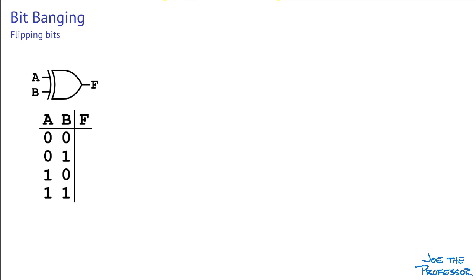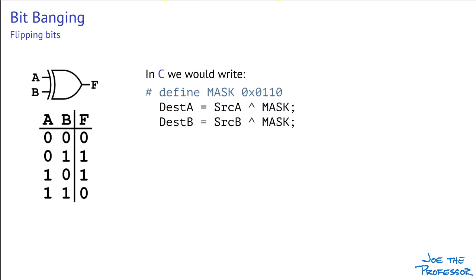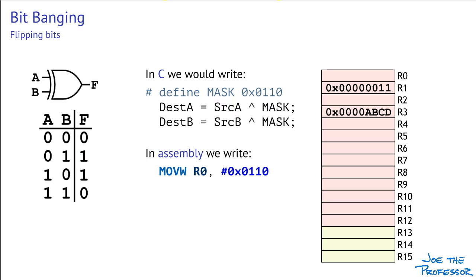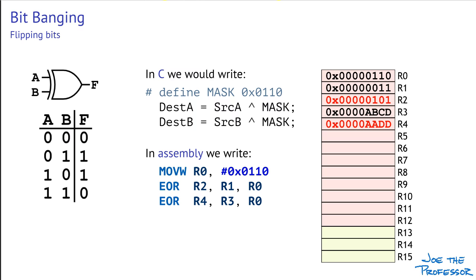The exclusive OR operation is used to toggle or flip a bit. Notice that if one input to the exclusive OR operation is a 1, then the result is the opposite — the complement — of the original value of the other input. On the other hand, if one input is a 0, then the output is just the same as the other input. In C, the circumflex is the exclusive OR operator — this character may also be called the caret or the hat. We don't need to invert the mask, and when we perform the exclusive OR operation, the bit locations in the result that correspond to bits that are ones in the mask are flipped.